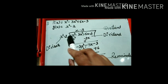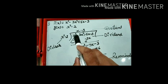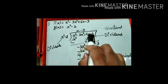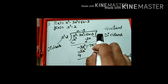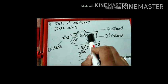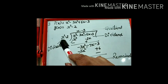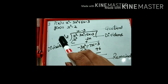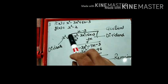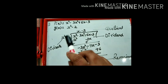Now let's see. First, we have to check that the dividend is in proper order — decreasing order: x cube, x square, x, and constant. Now this is our divisor. We have to check the order of the divisor: x² - 2. It is already in order.